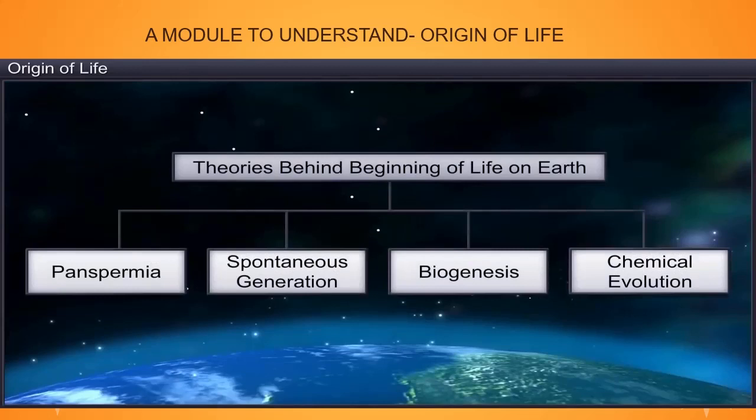There are different theories that try to explain the beginning of life on earth. Some of them are panspermia, spontaneous generation, biogenesis and chemical evolution.